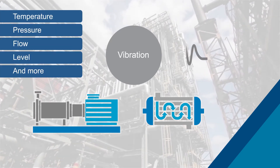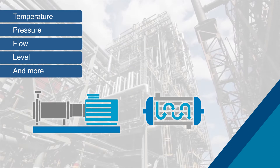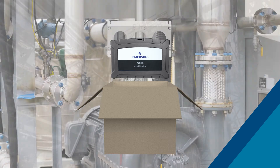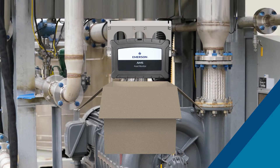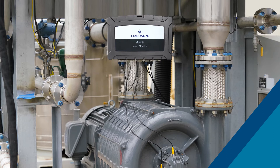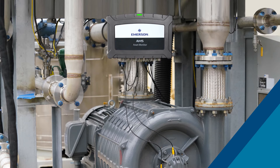On-board analytics apply this data to predefined templates for assets such as pumps and heat exchangers to deliver a more holistic view of asset health. Because it weighs less than 20 pounds, a single person can easily mount it near the asset being monitored. After the unit is operational, the AMS Asset Monitor delivers a visual indication of the health of the asset without opening the box and before you've looked at data.